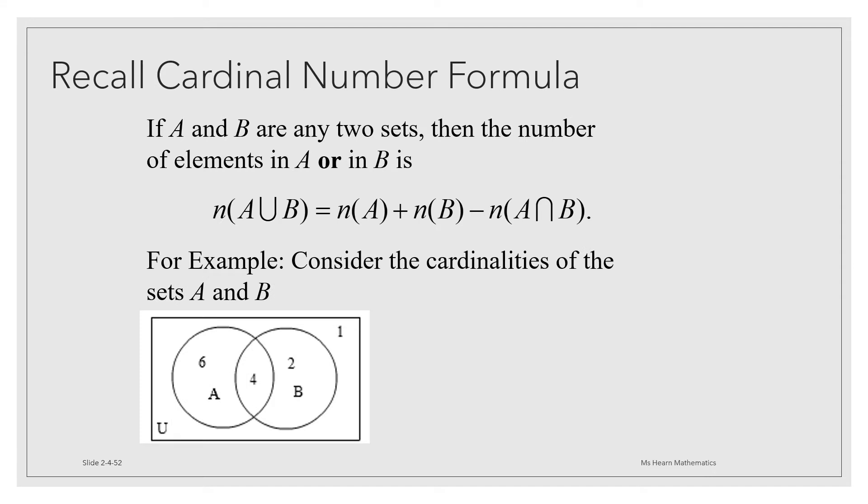For example, if this is a pair of sets A and B in the universal set U, and A contains 10 elements and B contains 6 elements, their overlap, the intersection, contains 4. Then the number that would be in A union B, the two sets put together,